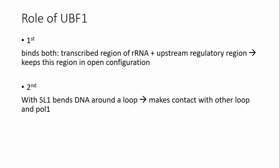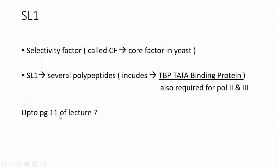When UBF1 binds, it bends the DNA and makes contact with other transcription factors. SL1 is also called selectivity factor 1, and in yeast it is called CF. This abbreviation stands for core factor.